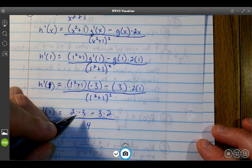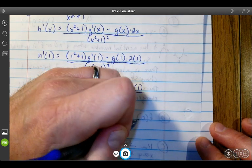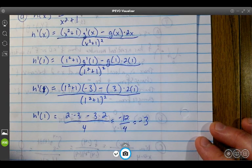So 2 times negative 3, negative 6 minus 6. So we get -12 over 4. We get negative 3 as our answer.